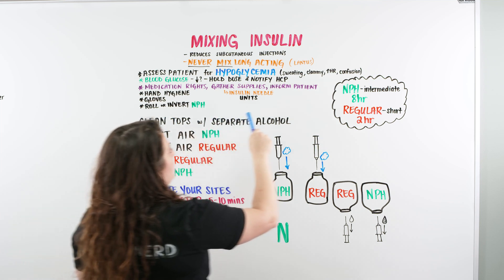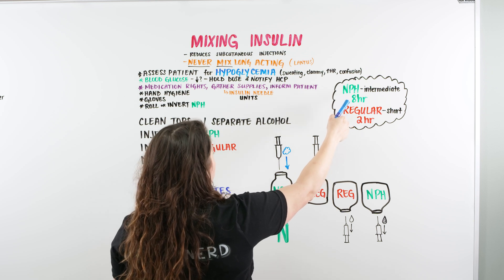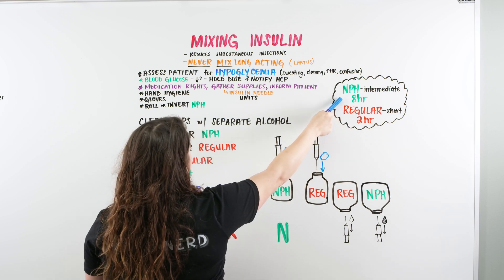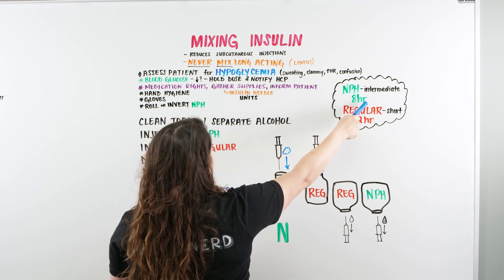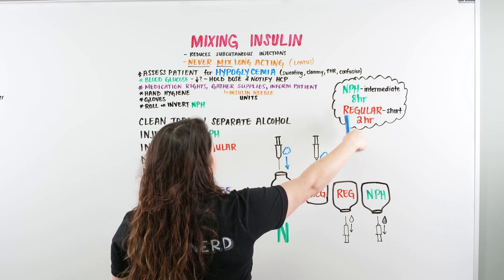When we do this, we want to make sure that we also inform our patient that when they take an intermediate NPH, an intermediate-acting insulin, it can reach its peak up to eight hours. And a regular, which is a short-acting, will reach its peak up into two hours.